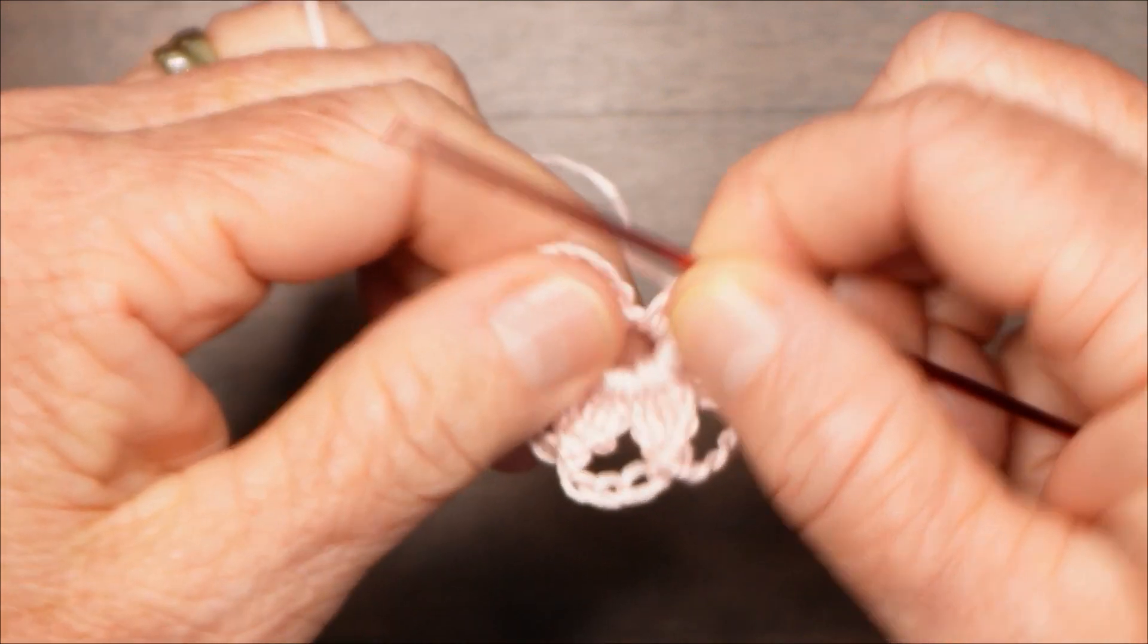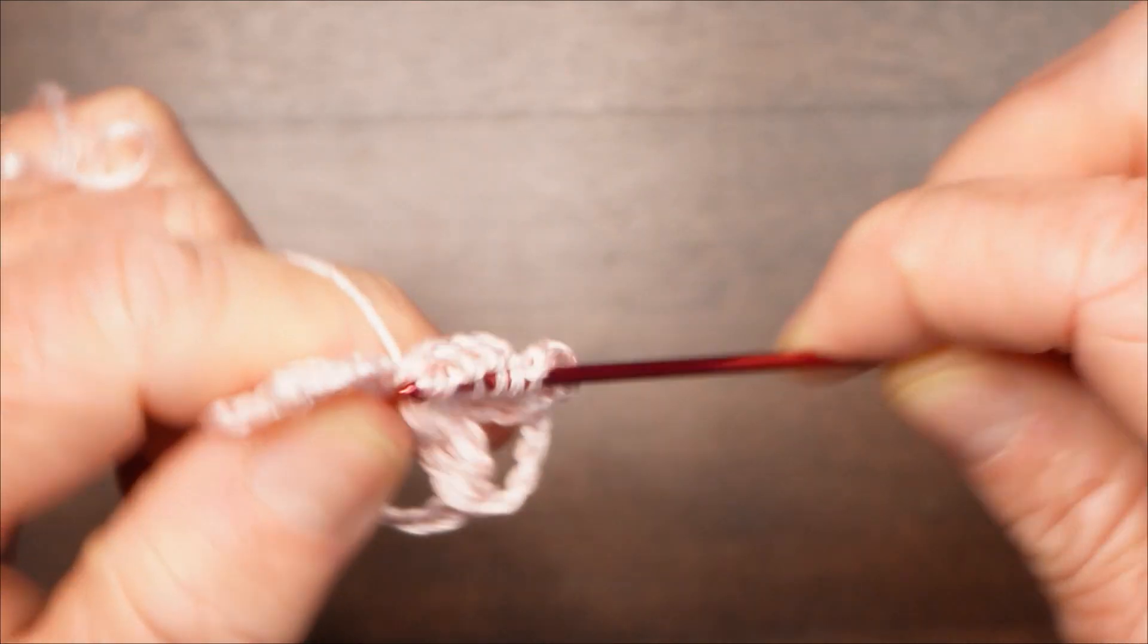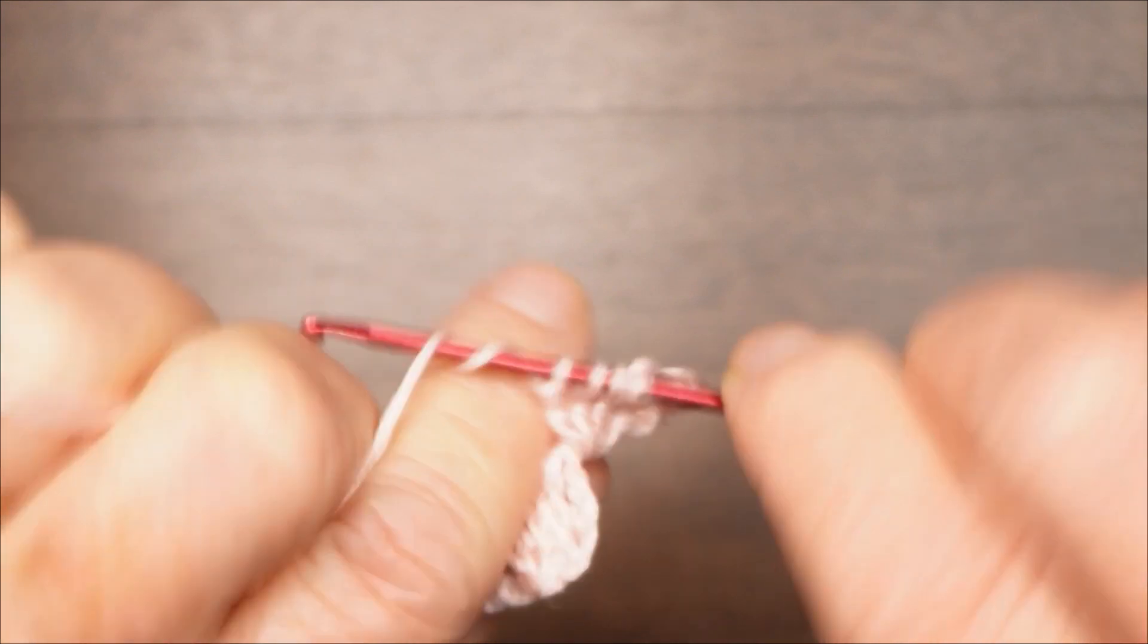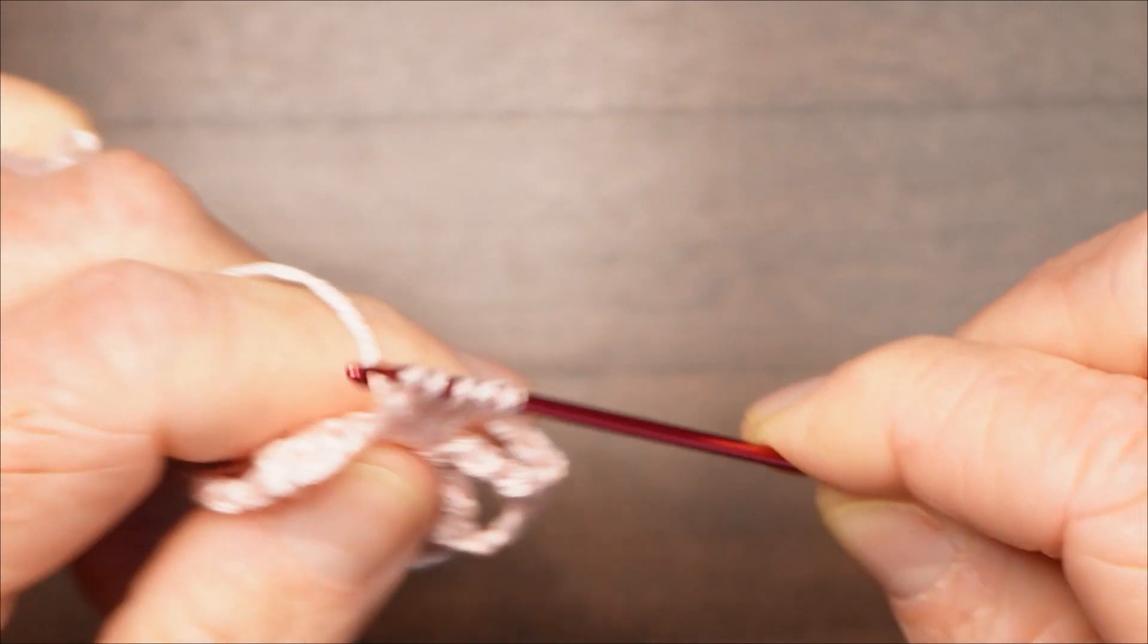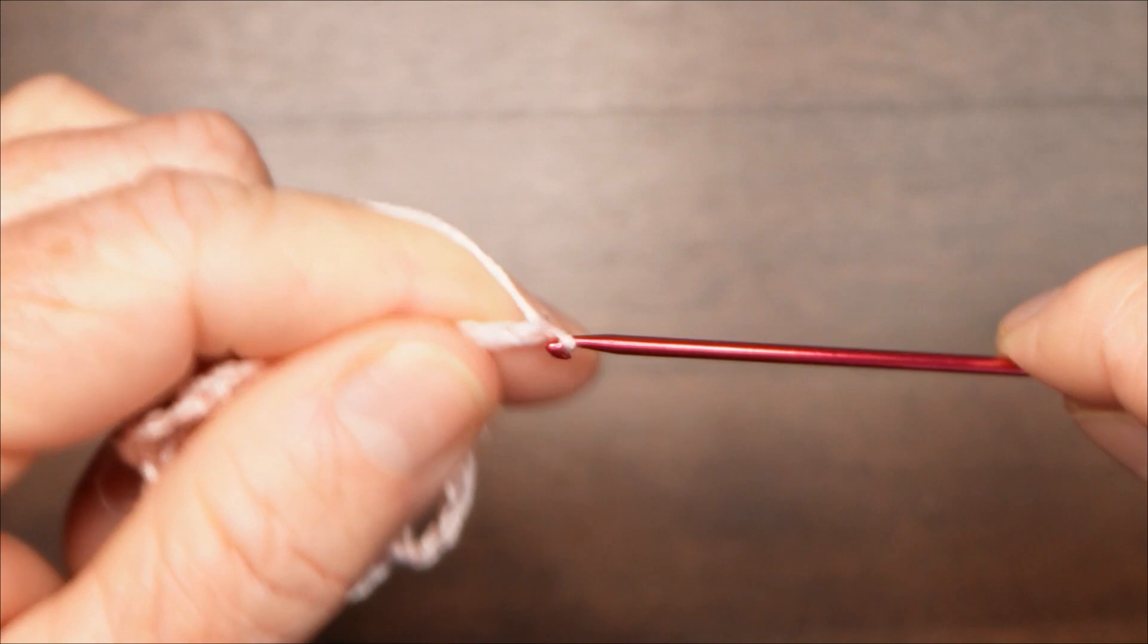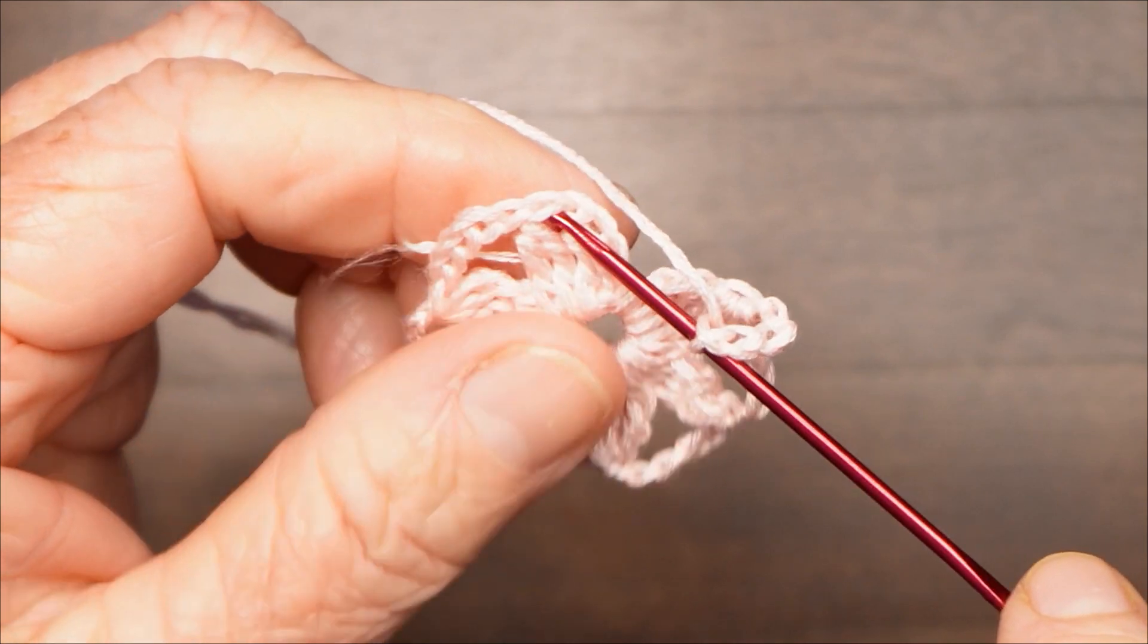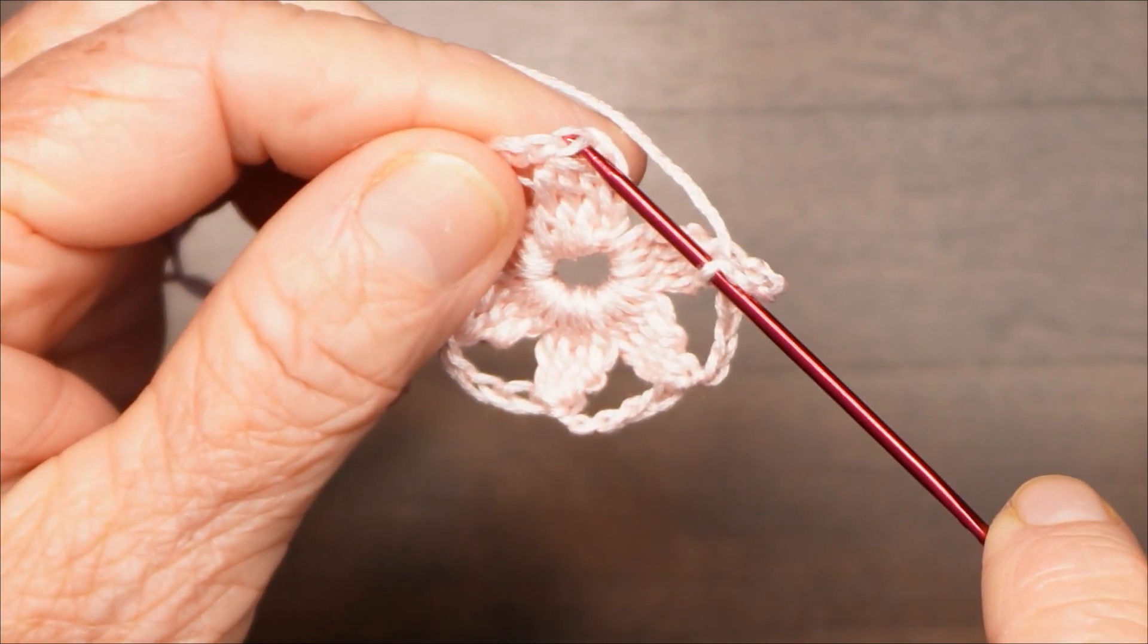You'll be left with five loops on your hook. Pick up the yarn and draw through all five to gather it together at the top. There's the second petal done, and I'm going to work four more petals in the same way. Chain five. When you get to the sixth petal, you might need to push them around the ring a little bit with your fingers to make them all fit evenly.